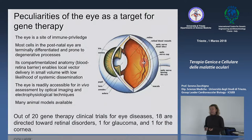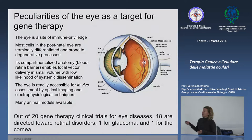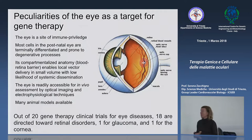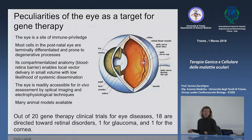La maggior parte delle cellule che compongono la struttura oculare sono cellule terminalmente differenziate, quiescenti, che non si riproducono più. Molte sono neuroni, quindi altamente suscettibili alla trasduzione da parte di vettori AAV. Per l'occhio, sicuramente AAV è il vettore di scelta. Queste stesse cellule, per il fatto di essere terminalmente differenziate e non avere capacità rigenerativa endogena, sono quelle che conducono ai processi degenerativi in molte forme di degenerazione retinica.